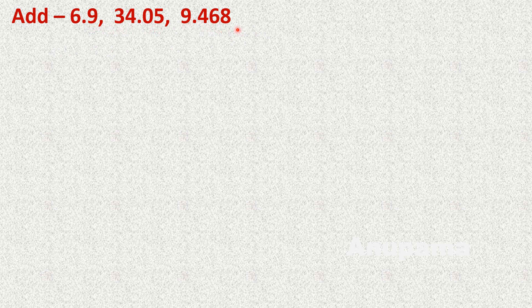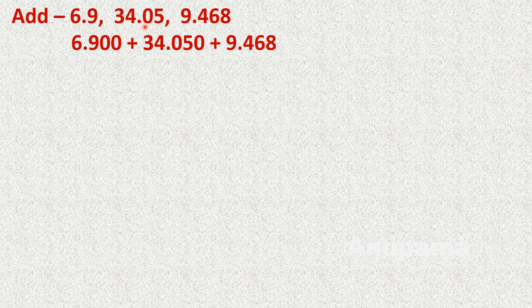First we will make like decimals, because here there is one decimal place, two decimal places, and three decimal places. So let us make all three decimal places: 6.900, 34.050, and 9.468. Now we will add them in column form.